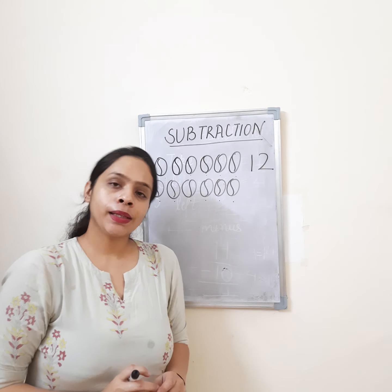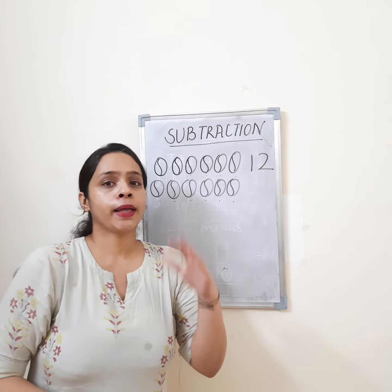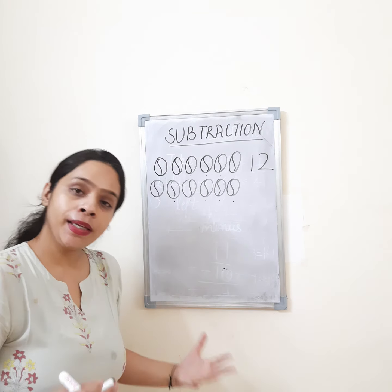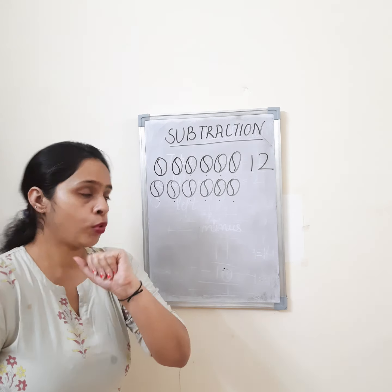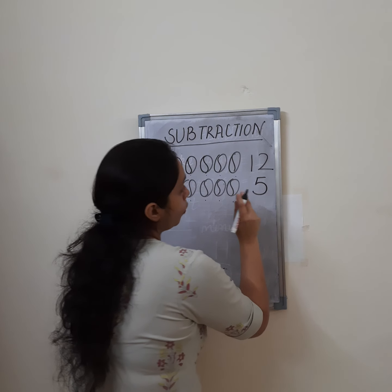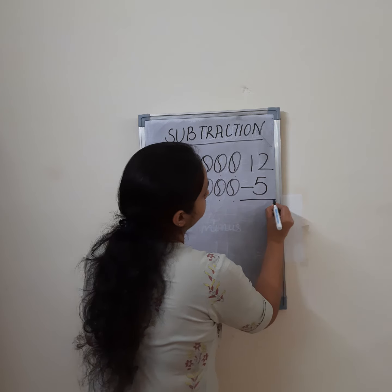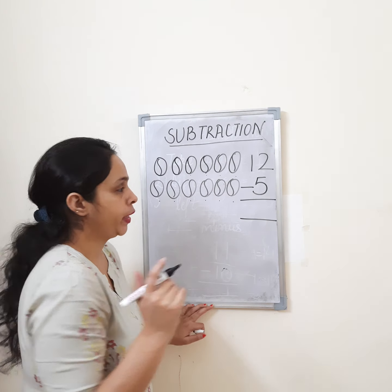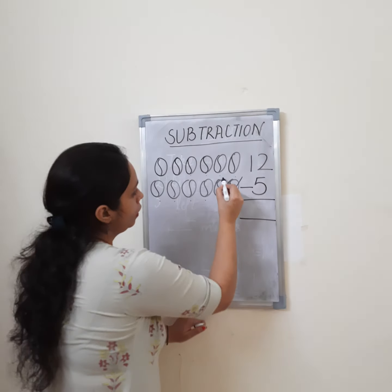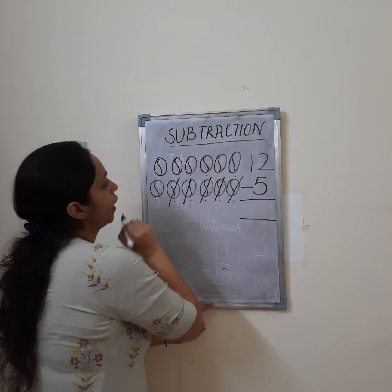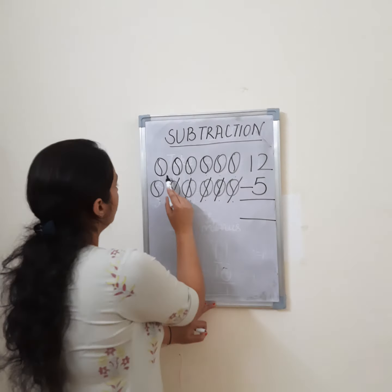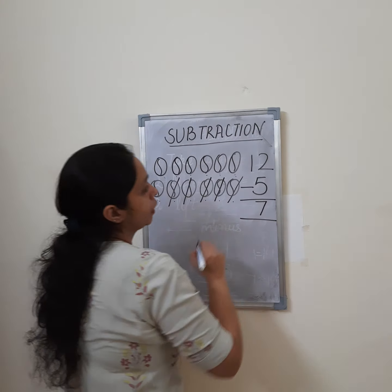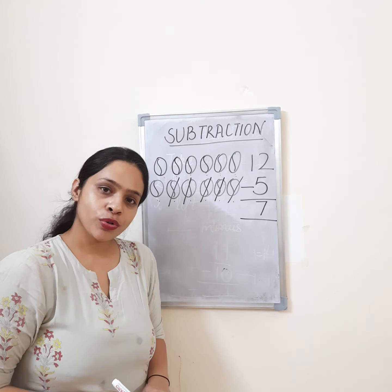You know how when you're playing, the ball sometimes gets lost — in cricket you hit a six and the ball goes away and mama scolds you! So we are going to remove 5 balls. What is the minus sign? This. Now 12 balls minus 5 balls: we cut five balls — 1, 2, 3, 4, 5. Now let's count how many are left: 1, 2, 3, 4, 5, 6, 7. So 12 minus 5 is equal to 7.